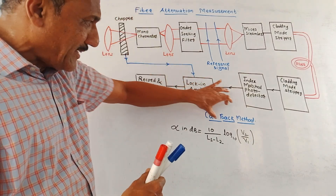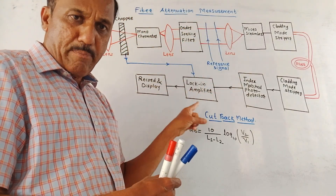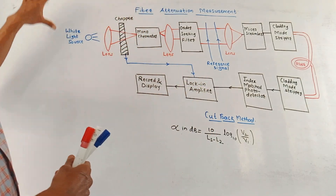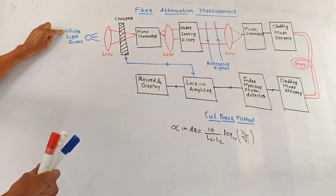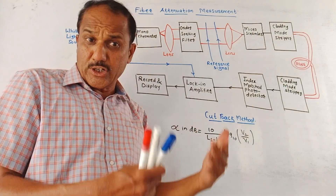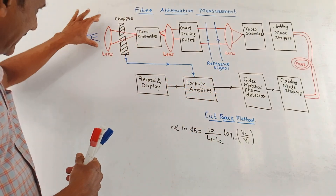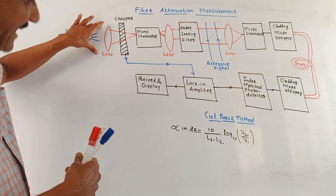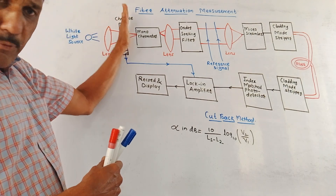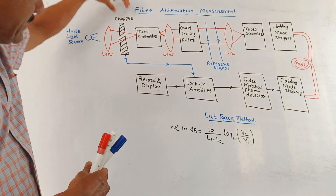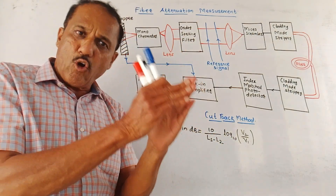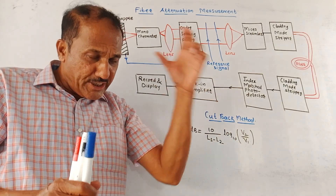First we will talk about the cutback method. This is the block diagram of the cutback method used to measure the attenuation in the fiber optic cable. At the input side, we are making use of a white light source — this may be a tungsten or halogen lamp which generates white light. Then we are using a lens to focus the signal properly. Next is the chopper, which chops the input signal.